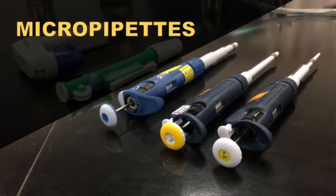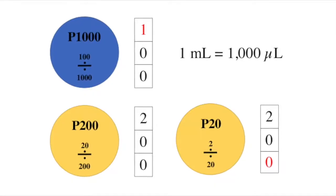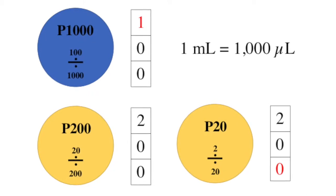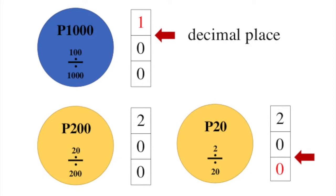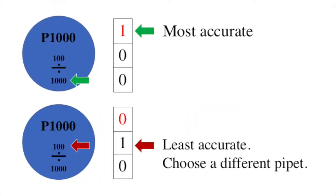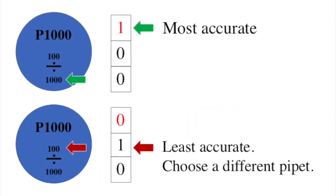For volumes less than 1 mil use a micropipetter. Remember that 1 milliliter equals 1000 microliters. Pipette values are in microliters with red windowed numbers indicating a decimal place between the next number. The maximum volume of the pipette is also the most accurate.